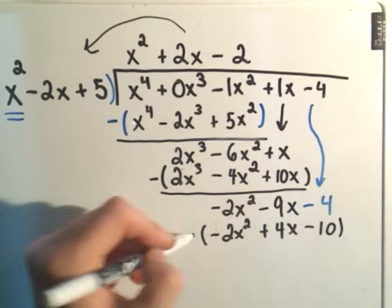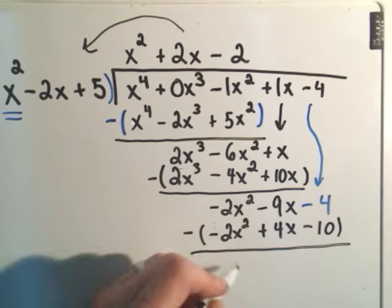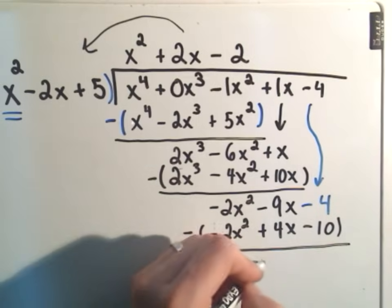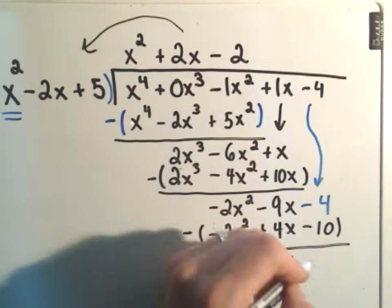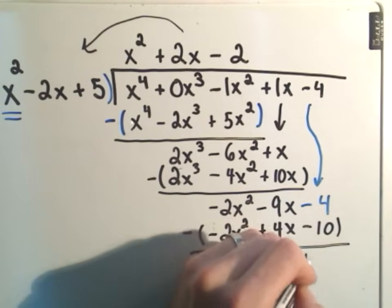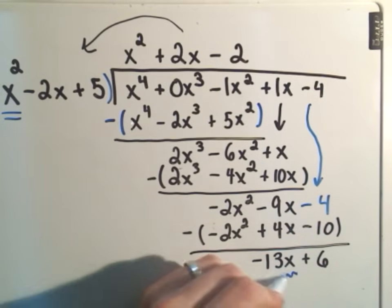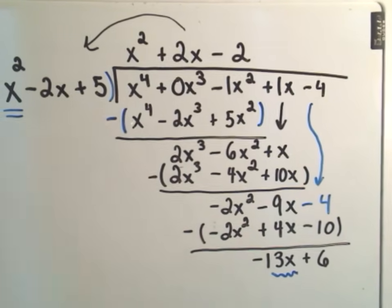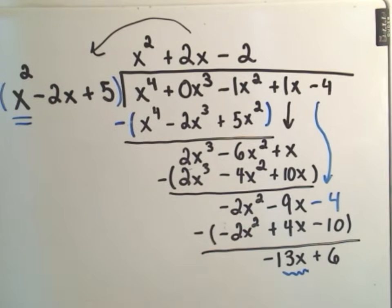I put it in parentheses and subtract. I'll get negative 2x squared plus 2x squared, which is 0x squared. I'll get negative 9x minus 4x, that'll give me negative 13x. And then I'll get negative 4 plus 10, which is positive 6. And once you look at the highest power of the thing that's remaining, once the degree of that is smaller than the degree of the highest power thing that you're dividing by, you are finished.